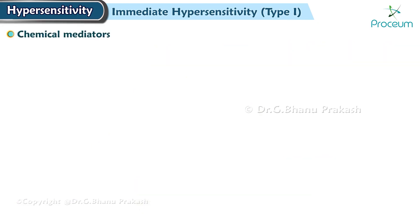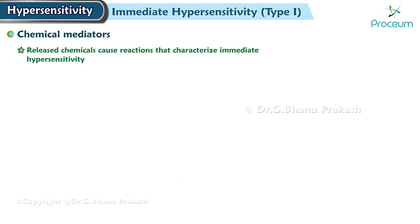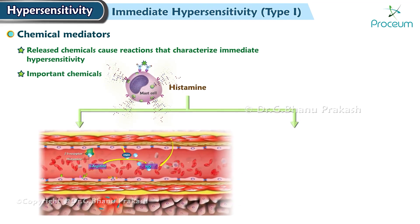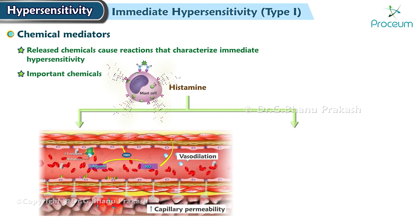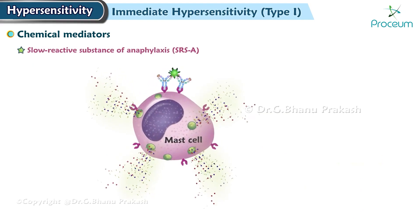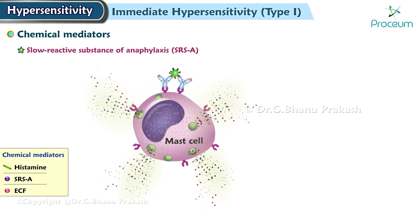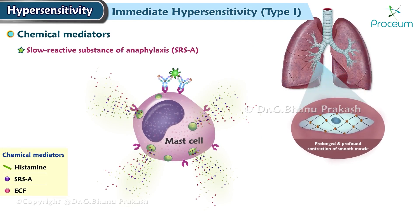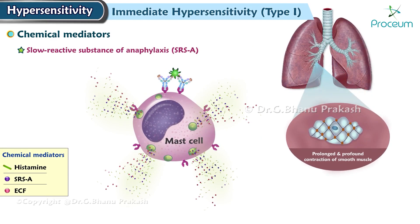Now for the chemical mediators of immediate hypersensitivity. These released chemicals cause the reactions that characterize immediate hypersensitivity. The following are among the most important chemicals released during immediate allergic reactions. Histamine, which brings about vasodilation and increased capillary permeability, as well as increased mucus production. Slow reactive substance of anaphylaxis, or SRSA, which induces prolonged and profound contraction of smooth muscle, especially of the small respiratory airways.